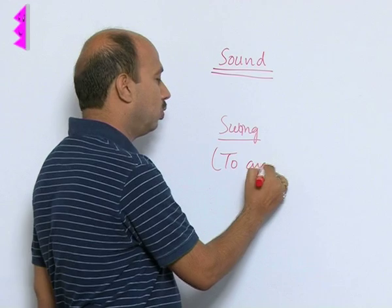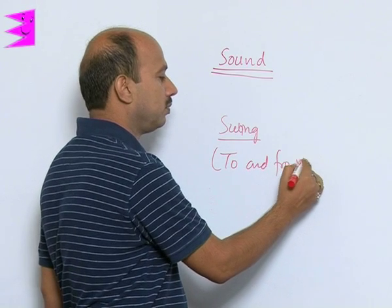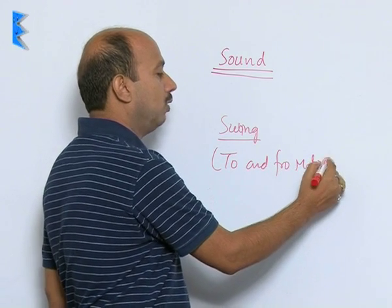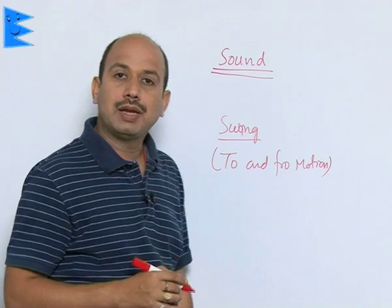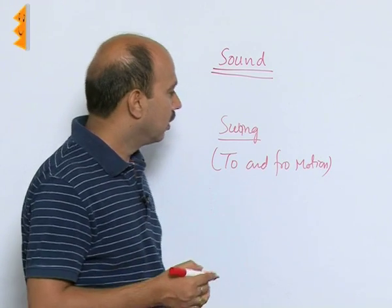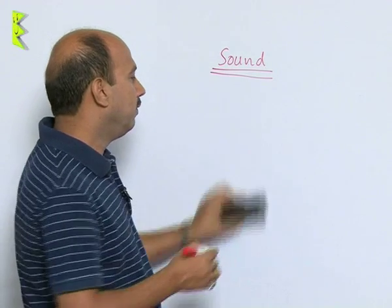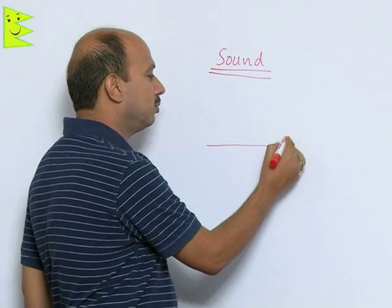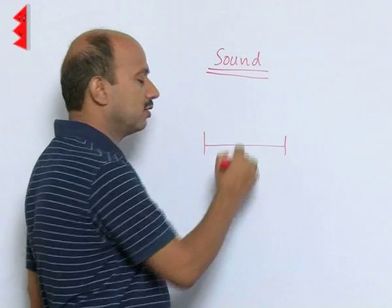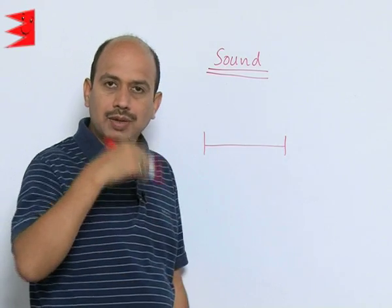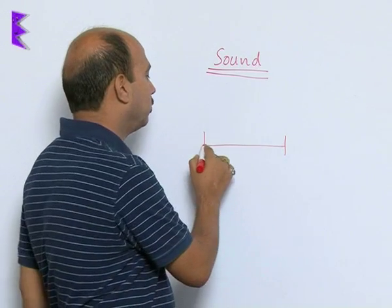In the same way, here we have to and fro motion, and also we call it vibrating motion or vibrations. Whenever any object, another thing is also there—if you take a rubber band and stretch it with the two ends and pluck at the center, you will find it starts moving like this. This is a vibration.